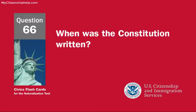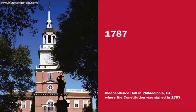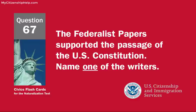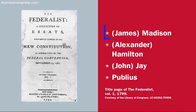When was the Constitution written? 1787. The Federalist Papers supported the passage of the U.S. Constitution. Name one of the writers. James Madison.